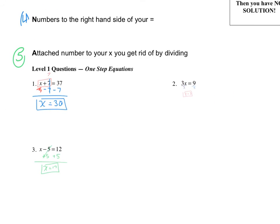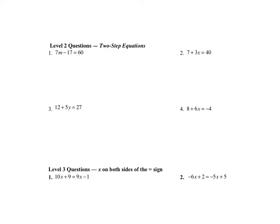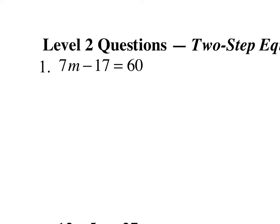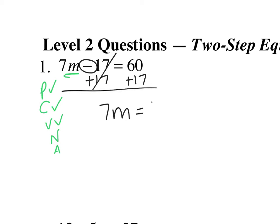Those are our one-step equations. Let's go on to two-step equations. Here's what we're going to do again — PCVNA. Can I get rid of parentheses? There are none. Can I combine my 7m and my 17? No. Are all of my variables on the left-hand side? Yes, my 7m is. Are my numbers on the right-hand side? No — I have a minus 17. How do I get rid of a minus 17? I add 17 to both sides, so I get 7m equals 77. Now all my numbers are on the right-hand side. Final step: get rid of the number attached to your m by dividing. I divide by 7 on both sides, so I get m equals 11.